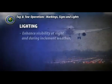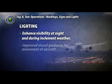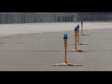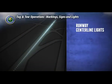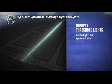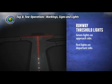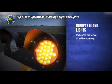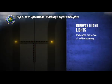Airport lighting is provided to enhance visibility at night and during inclement weather and also provides improved visual guidance for the movement of aircraft and ground vehicles. Lights may be mounted on surface structures, above ground, and in pavement. On runways, centerline lights will be white with the exception of the final 3,000 feet, where red and white lights alternate until the final 1,000 feet in which continuous red lights are used. Threshold lights are located on each end of the runway—green on the approach side and red on the departure side. Runway edge lights are white but will change to yellow for the last 2,000 feet. Flashing yellow runway guard lights indicate the presence of an active runway ahead and are located on either side of the holding position marking.